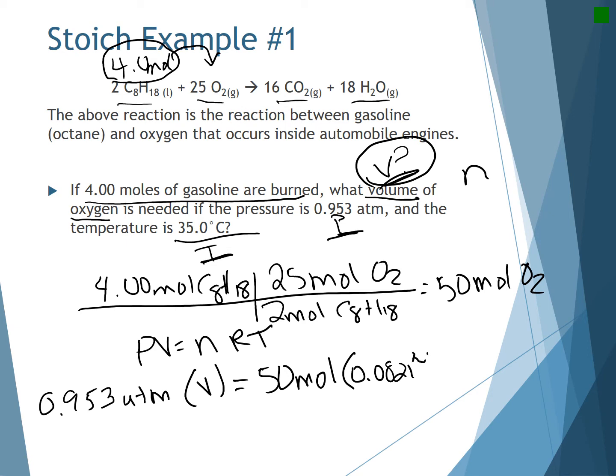My R is going to be the R value that you would use for atm, so it would be 0.0821 liters atm per Kelvin times moles. And then I know my temperature in Kelvin, which would be 35 plus 273, is 308 Kelvin. When you solve this, you get your volume is equal to 1326.7 liters, which rounded is equal to 1,330 liters.